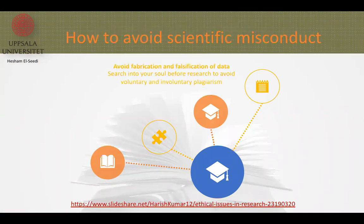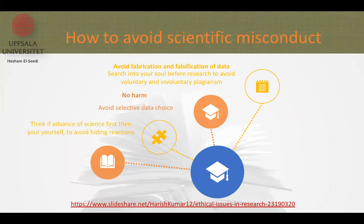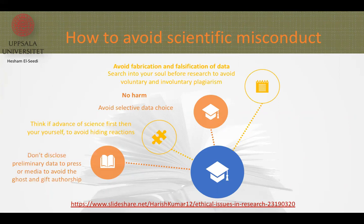How to avoid scientific misconduct: it is very important to avoid fabrication and falsification of data, search into your field before research, and avoid voluntary and involuntary plagiarism. Avoid harm, avoid selective data, think in advance of science first then yourself, and avoid hiding your actions. Don't disclose preliminary data to the press or media. Avoid ghost authorship and gift authorship.